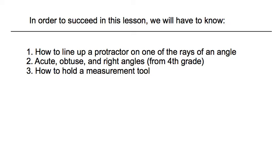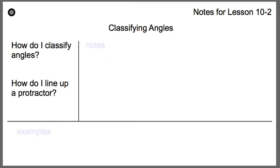In order to succeed in this lesson, you're going to have to know how to line up a protractor on one of the rays of an angle, remember acute, obtuse, and right angles from fourth grade, and also how to hold a measurement tool. You really just have to clamp down that measurement tool as you're measuring or drawing with it, just so it doesn't slip and make weird marks.